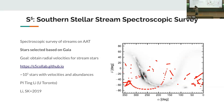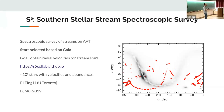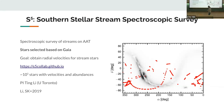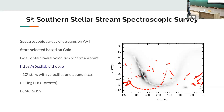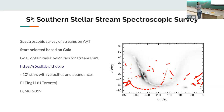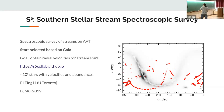Now let me switch to the actual examples of this work. The work I'm going to talk about is based mostly on the S5 survey, a survey led by Ting Li at the University of Toronto, which has been following up stars in stellar streams using the AAT telescope with pre-selection from Gaia. By now, we've observed about 100,000 stars — you can see the footprint here — and we've gotten information on more than a dozen stellar streams.